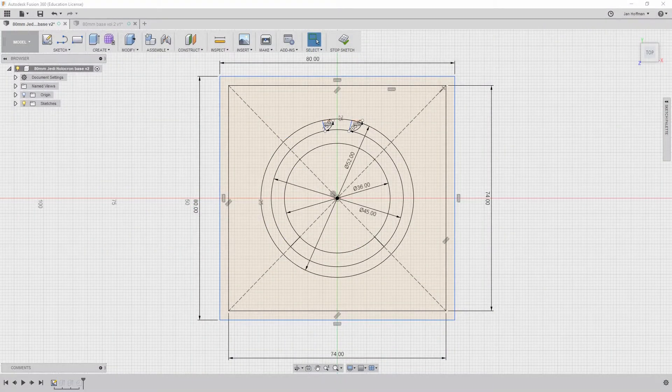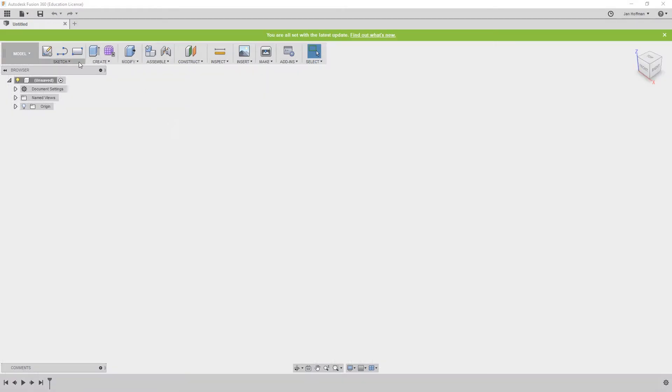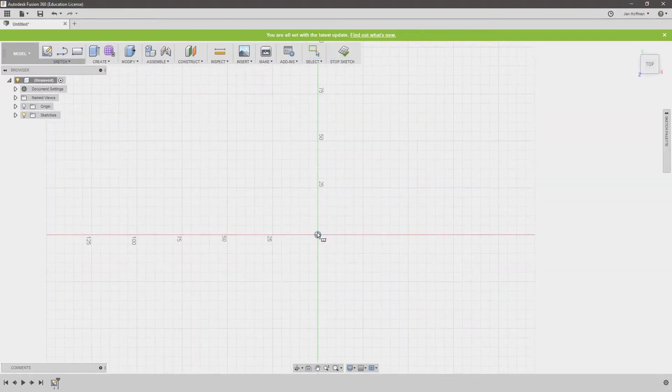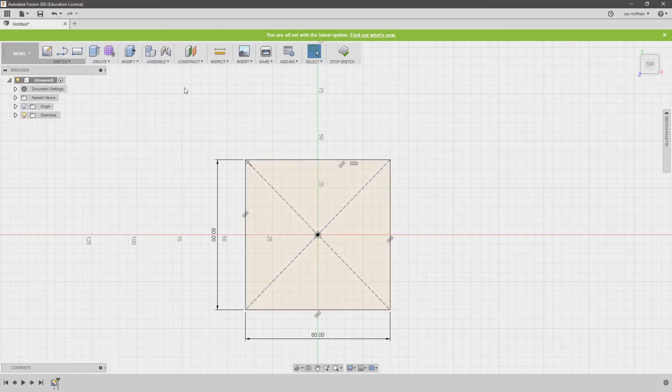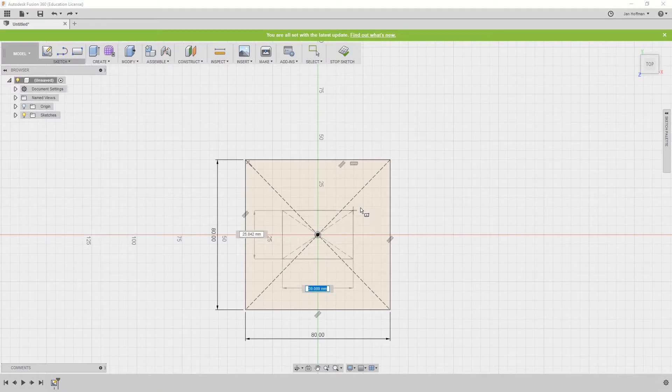But let's start from the beginning to get a better idea on how this is made. To begin with, since we're creating a rather symmetrical shape, let's begin with the Center Rectangle tool from the Sketch menu, hit the center point or the origin, and write in 80 and 80 millimeters from our sketch. Create another one, and this time 74 and 74 from our sketch.